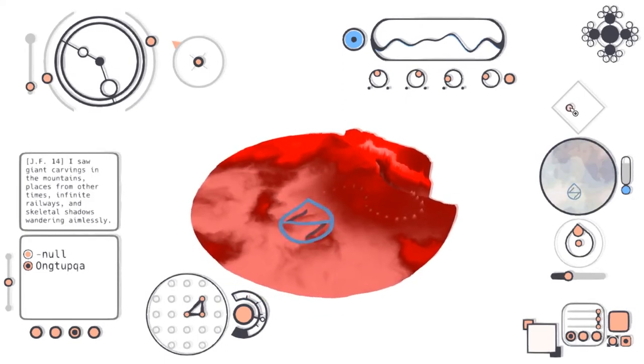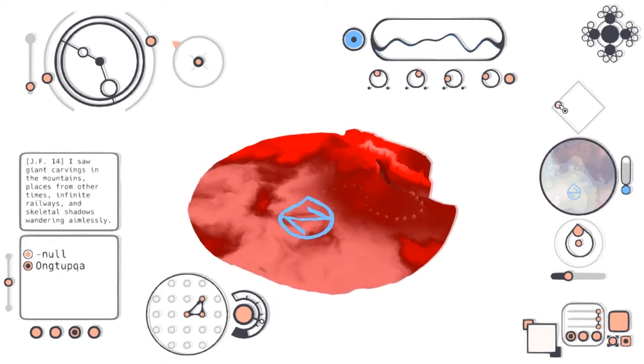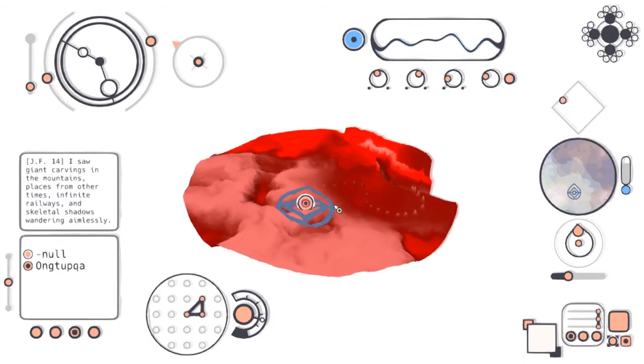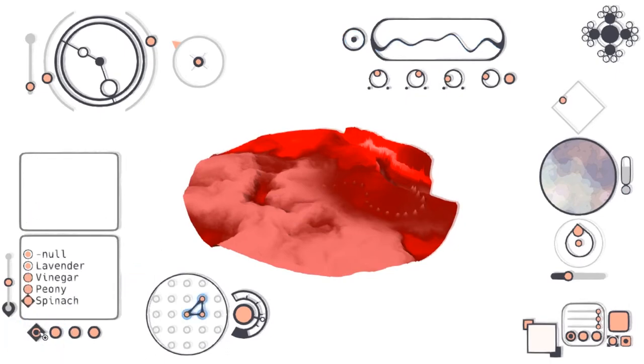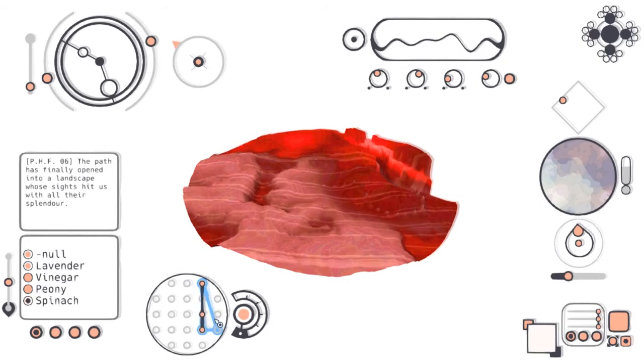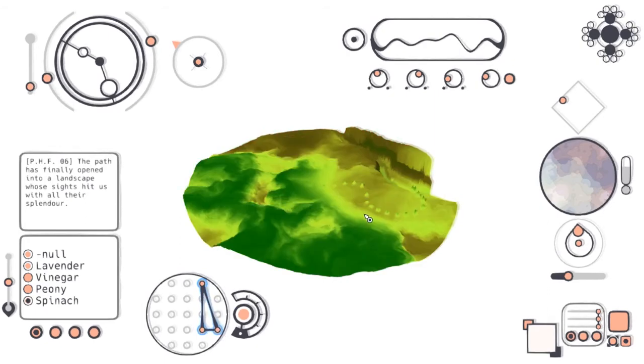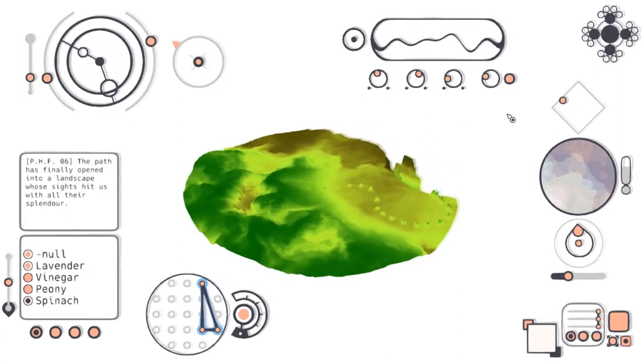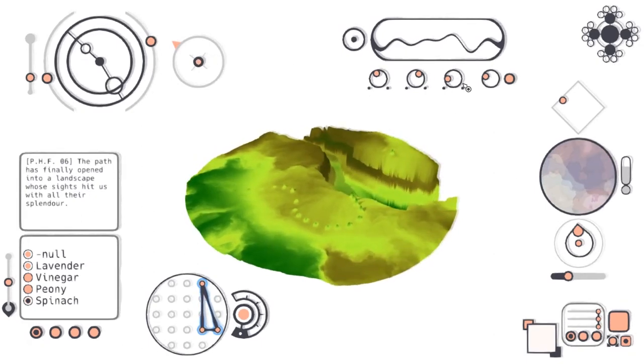A little hint. Spinach. The path has finally opened into a landscape whose sights hit us with all their splendor. Let's see what we get with spinach. It is very, very green. Can we zoom in a bit? There's like some feature of the landscape here. So that's what this was for. This allowed us to see this right here. Beautiful. It has to be just right or you can't see it. That's amazing.